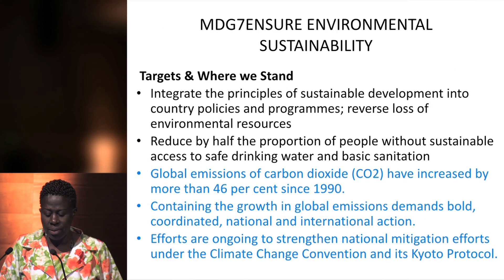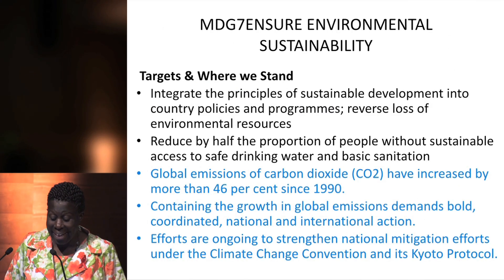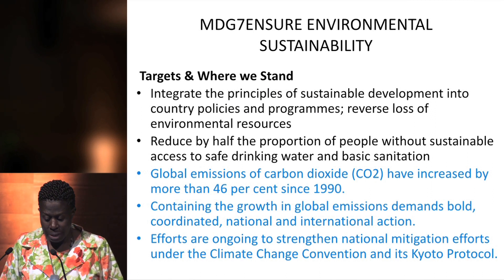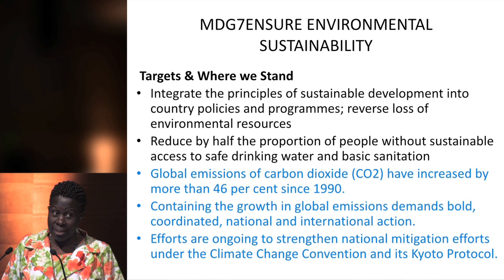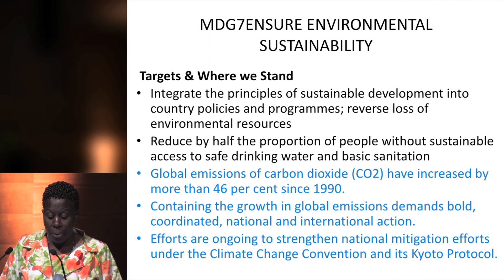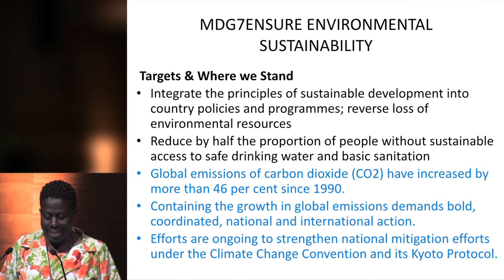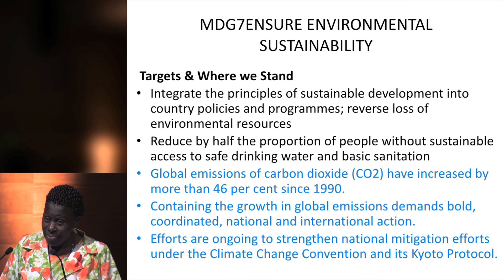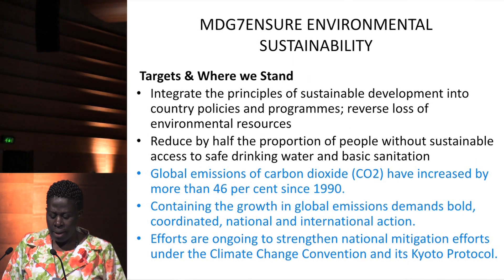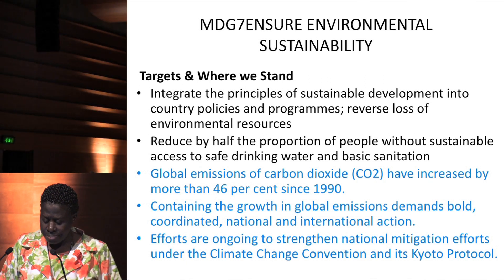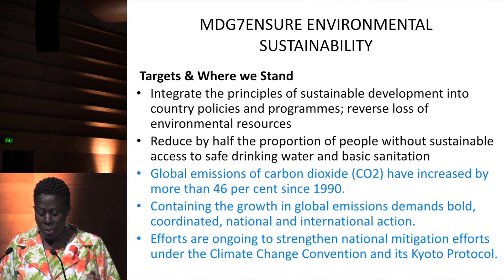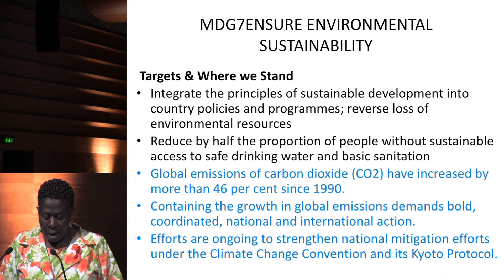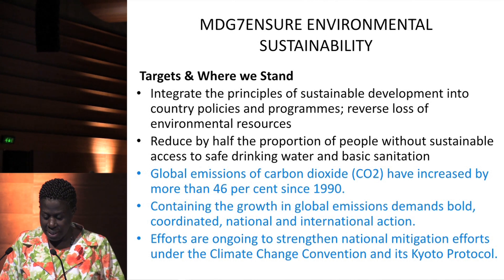MDG VII is environmental sustainability. The targets were to integrate principles of sustainable development into country policies and programs, to reverse the loss of environmental resources, and to reduce by half the proportion of people without sustainable access to safe drinking water. However, global emissions of carbon dioxide have increased by 46%. The growth in global emissions demands bold, coordinated national and international action, and efforts are ongoing to strengthen national mitigation efforts.